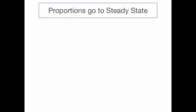That means, technically expressed, proportions go to a steady state. At steady state, we can formulate the condition as an equation: the population proportions at time t are exactly the same as those at time t plus 1.